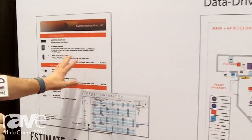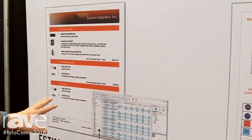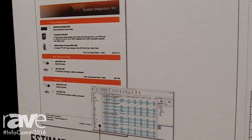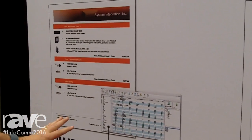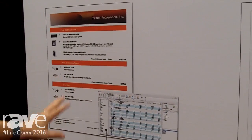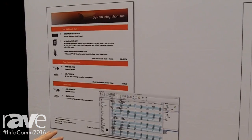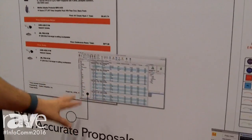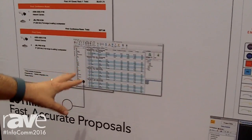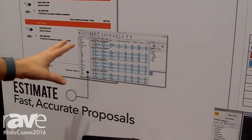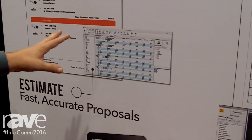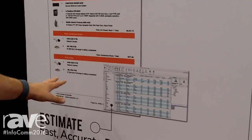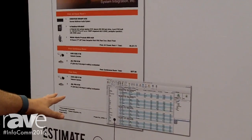What our software allows integrators to do is to data drive the way they do their projects. They're going to build a catalog of the products that they sell and install, and they're going to build a bill of materials. From this bill of materials, we're tracking time, we're tracking labor, we're tracking costs, so they can generate an accurate proposal for their customers.